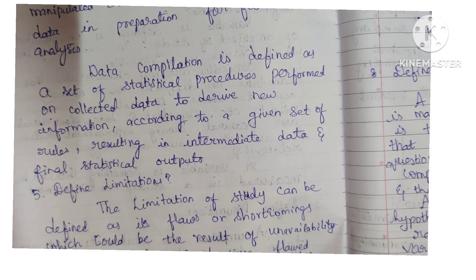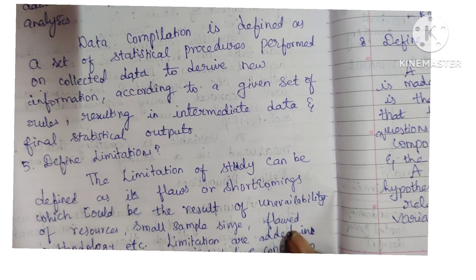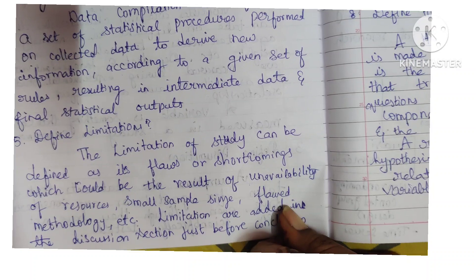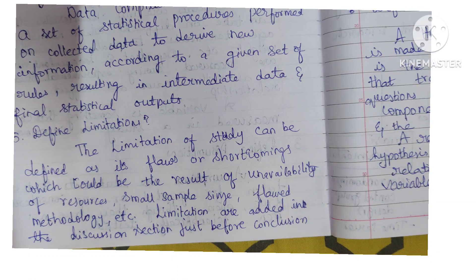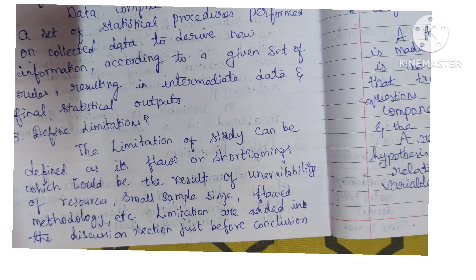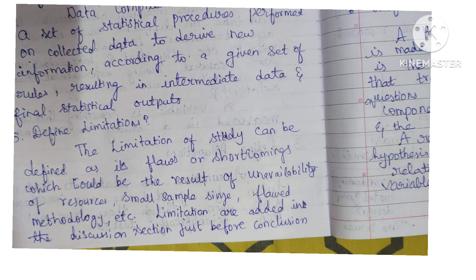Fifth question: define limitations. The limitation of a study can be defined as flaws or shortcomings which could be the result of unavailability of resources, small sample size, flawed methodology, etc. Limitations are usually added in the discussion section just before the conclusion part.